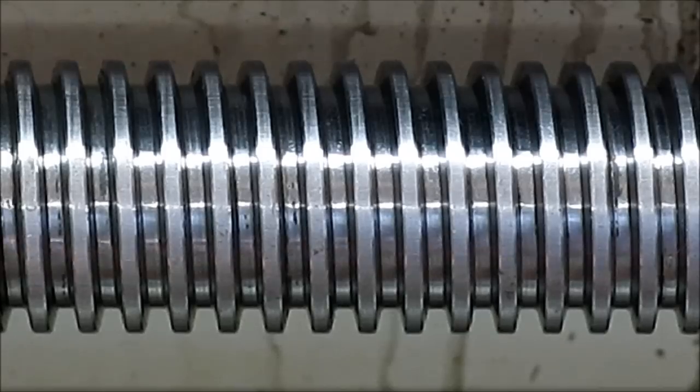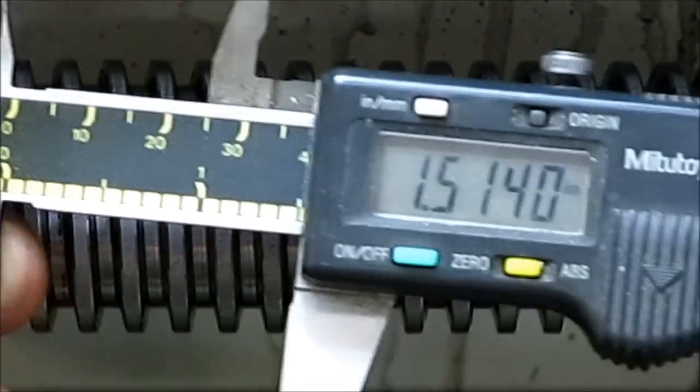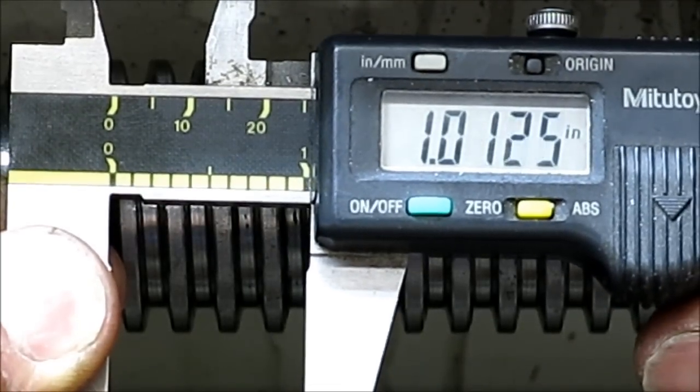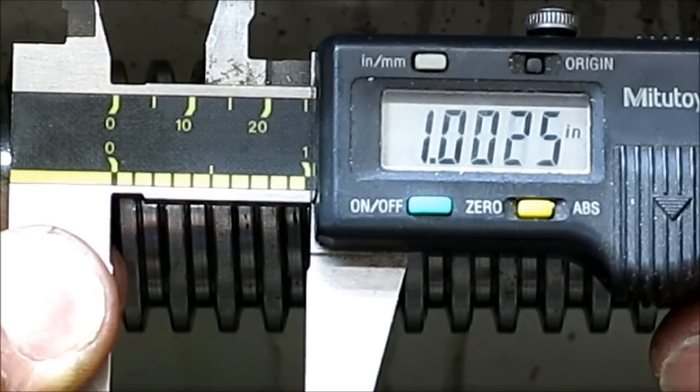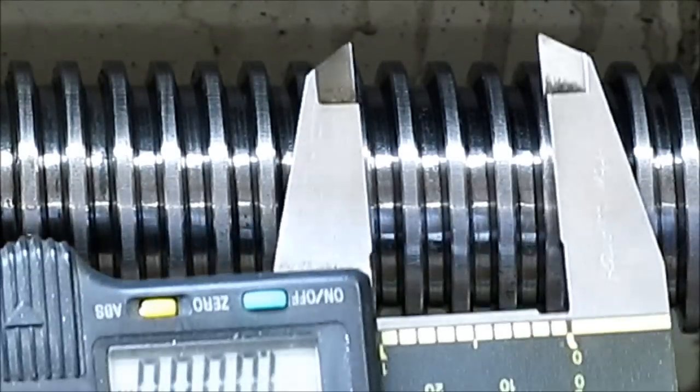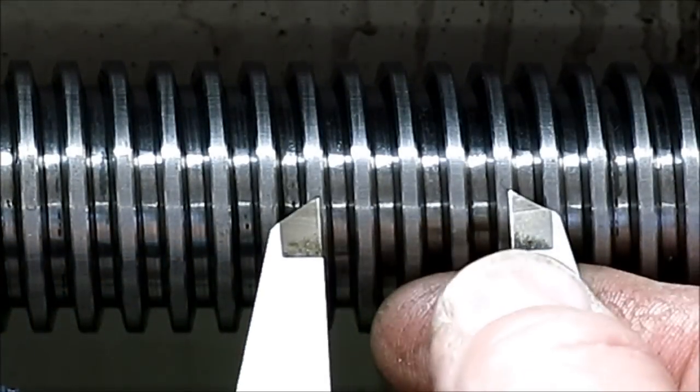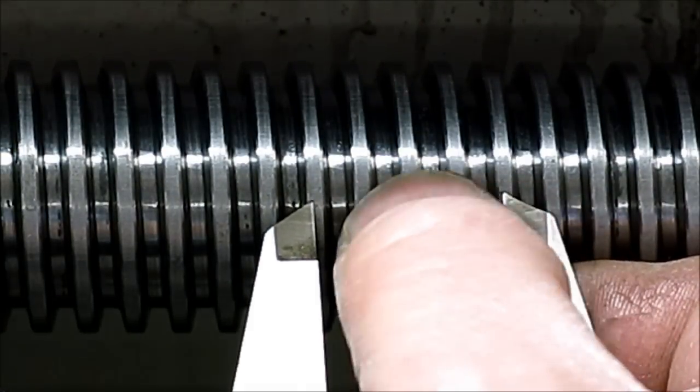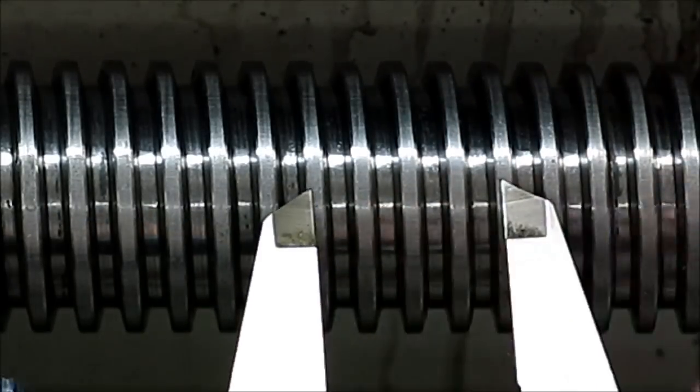And so set your calipers at one inch. Like so. And then lay them on the crests of the threads. And yeah, they're flats. But lay it on the crests of the threads like that. Count how many full threads and then add the two halves or just see what you get.